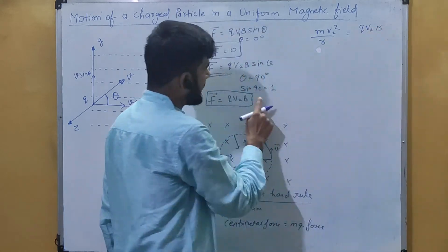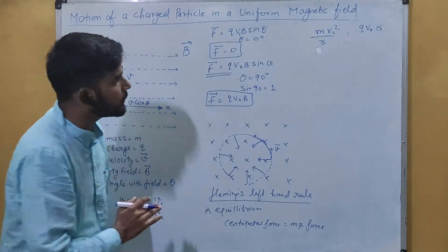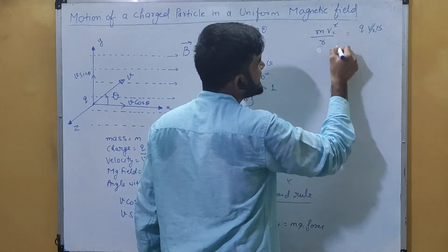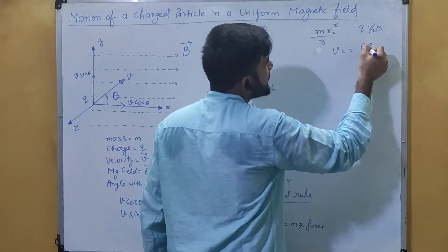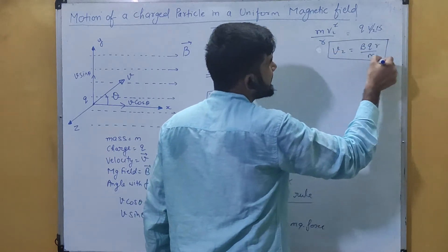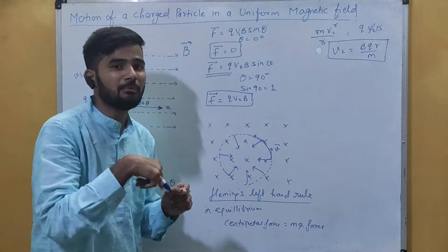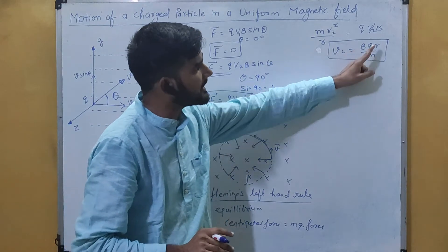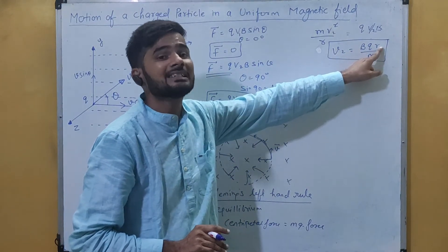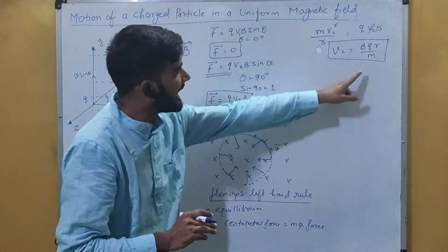Since sin theta is 90 degrees here, it equals 1, so v2 = Bqr/m. This is the velocity with which the particle moves inside the magnetic field. Here B is the magnetic field, q is the charge, r is the radius of the circle in which the particle moves, and m is the mass of the particle. From the linear velocity, we can also calculate the angular velocity.